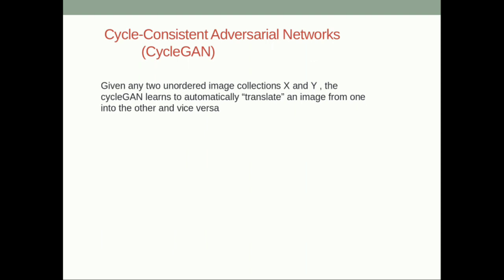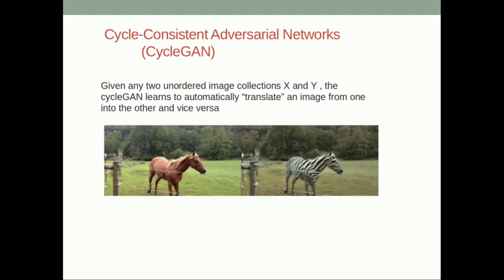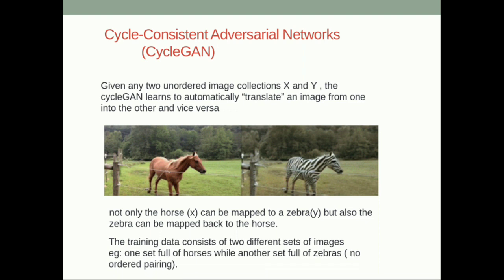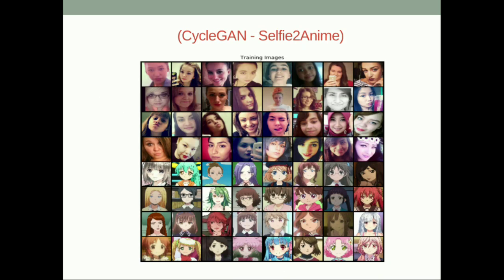In CycleGAN we have two domains — domain X and domain Y (or A and B). CycleGAN learns to translate from one domain to another in an unsupervised way. For example, a horse is translated into a zebra, and it also translates the zebra back to a horse. Our dataset today is selfie-to-anime: the first four rows contain selfies (domain A) and the last four rows contain anime images (domain B), with no corresponding pairs.